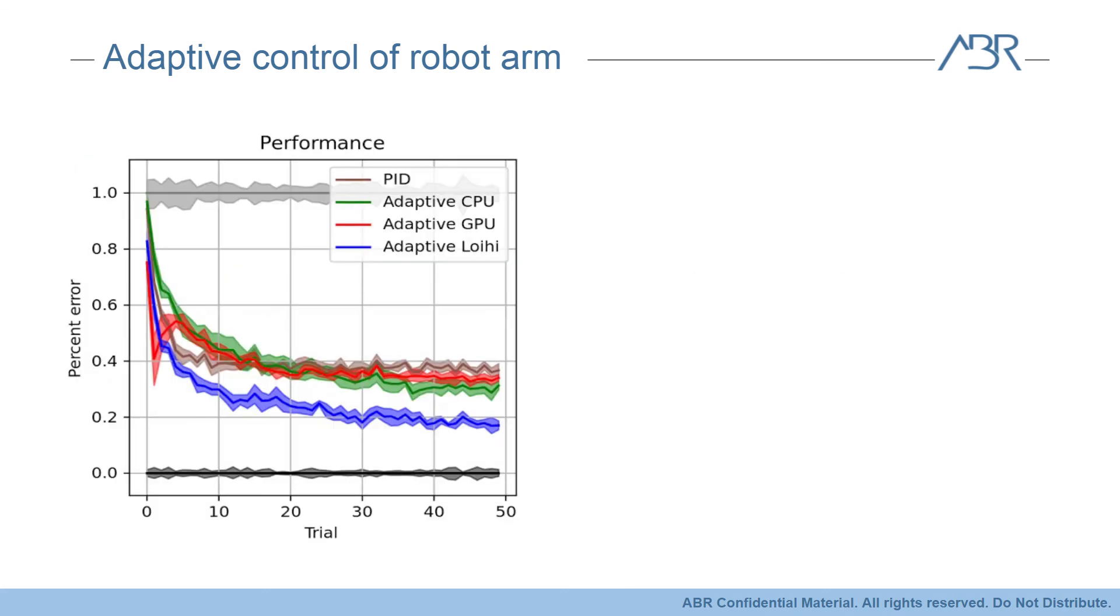Now, let's look at some results. The task that we're having the arm do is just reaching to the same target over and over again. Each reach from the starting position to the target counts as one trial, and we measure the deviation from a straight line as the error. To test adaptation, we perform this reach with an unmodeled two-pound weight in the hand of the arm. In this plot, the black line is the performance of the non-adaptive PD controller reaching without the weight. The gray line is the performance of the non-adaptive PD controller reaching while holding the two-pound weight.